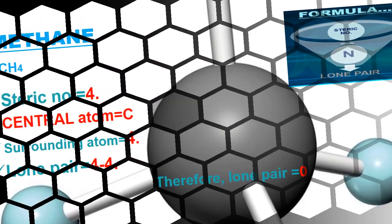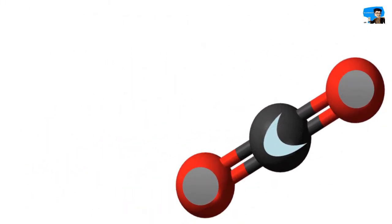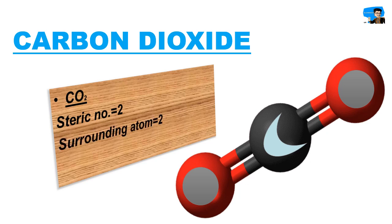Next example is carbon dioxide, CO2. The steric number is 2. The central atom is carbon, and the surrounding atoms are 2 oxygen atoms, so n equals 2. By the formula: steric number minus n = 2 minus 2 equals 0. Carbon dioxide has no lone pair on the central atom.